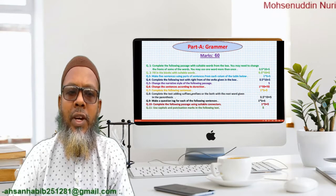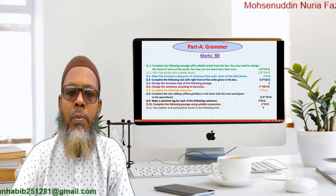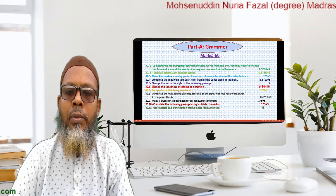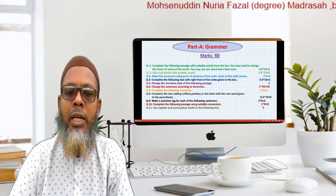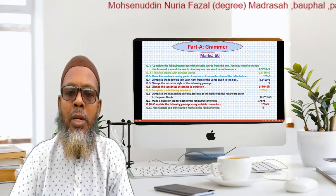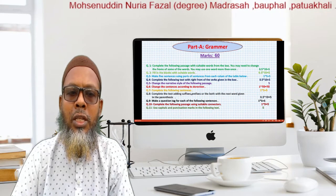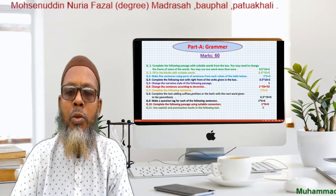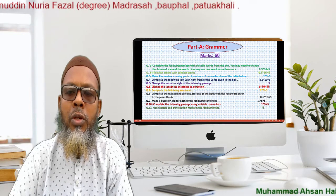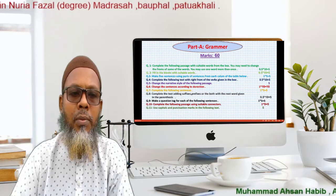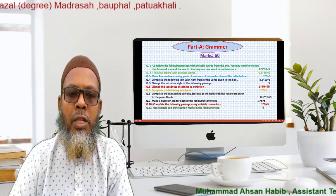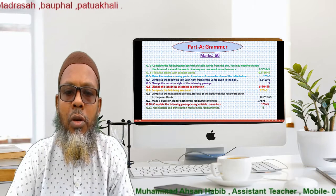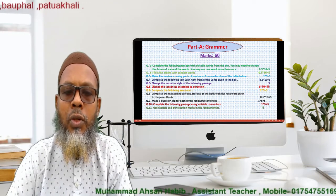Question 2: Make 5 sentences using parts of sentences from each column of the table. Question 3: Make 5 sentences using parts of sentences from each column of the table. Question 4: Complete the following text with the right forms of the verbs given in the box.